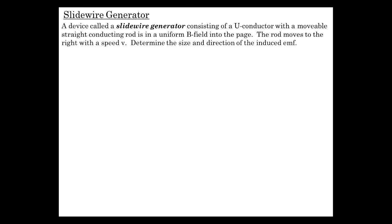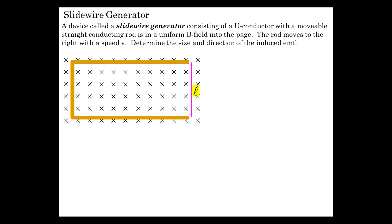To start making sense of this new idea of induction, there's a device that comes up frequently in AP problems and tests called the slide wire generator. It consists of a U-shaped conductor in a uniform magnetic field, open at one end, with a sliding conductor on it. As it slides along, moving to the right, an induced EMF occurs in the wire which produces a current. We're going to figure out what the size and direction of that induced EMF is.